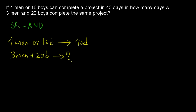Whenever the number of persons or number of days are given, we use a direct formula. In cases where they are not given — like 'A and B can do a work in 5 days and 6 days respectively' — you use the chocolate approach. But here the numbers are given, so we use the formula P1×T1 / W1 = P2×T2 / W2.